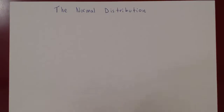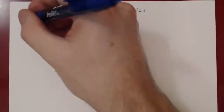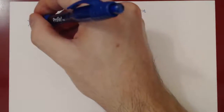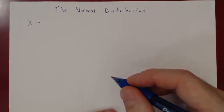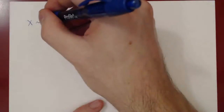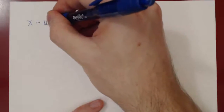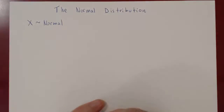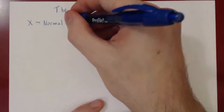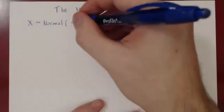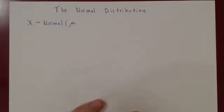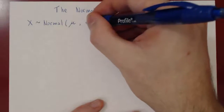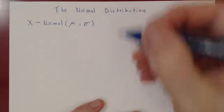What is the random variable? We usually write x with a squiggly line to say x follows the given distribution. We write 'Normal' for the normal distribution, and there are two parameters: the first parameter is the mean, which we denote by mu, and the second parameter is sigma, the standard deviation.